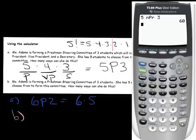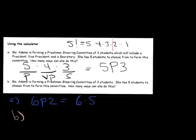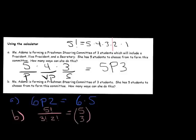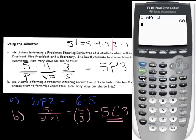The second example we noted was where Mrs. Adams was choosing 3 students and they were just a committee of 3 people — none of them had special assignments or anything like that. So that was 5 choose 3, which ended up being 5 factorial divided by 3 factorial times 2 factorial. That can often be written in different notations. In the calculator, to compute it, we'd hit 5C — we'd use the combination button.